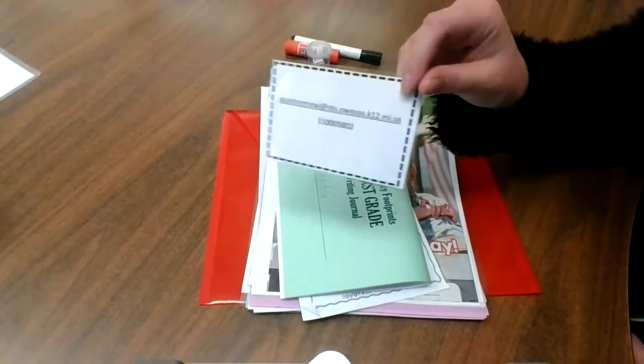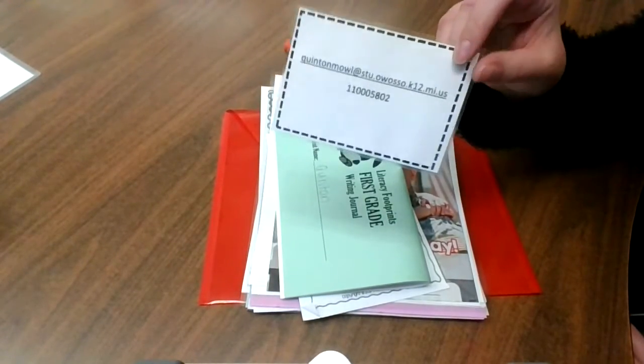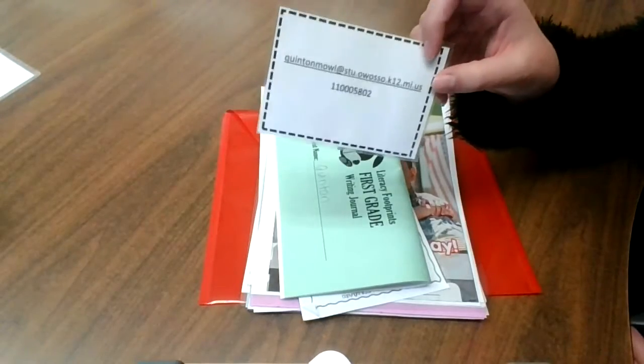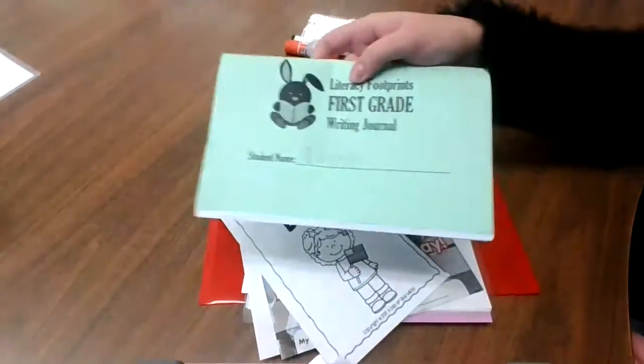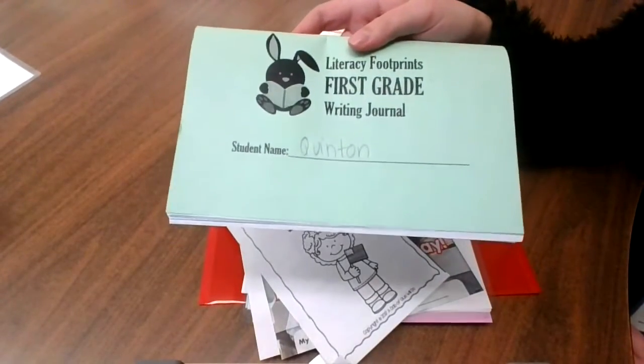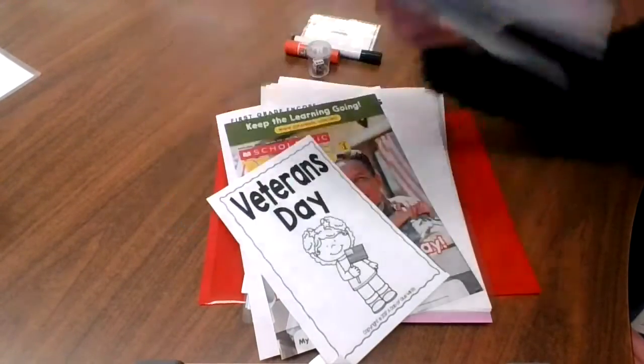This is your student's login and password. If they're going to be using a Chromebook to get in, this would be what they need to sign in with. And then this will be for when they meet with me on live Zoom for guided reading. We will use this journal.